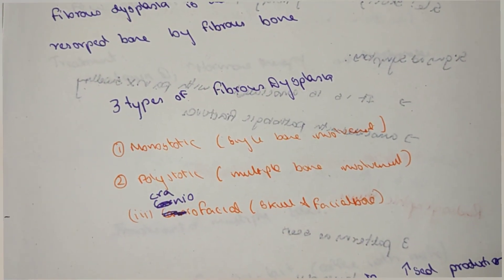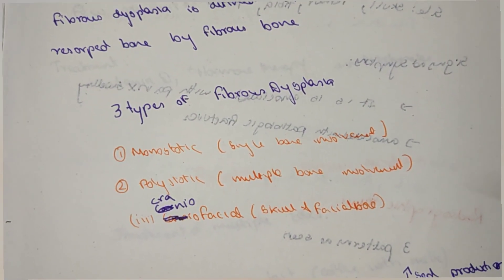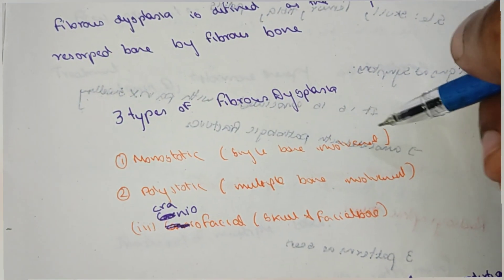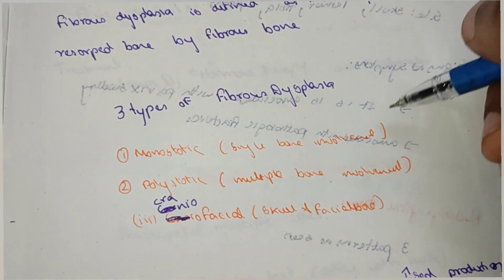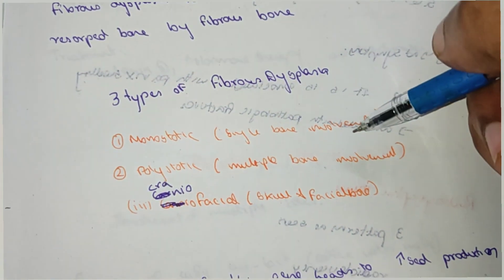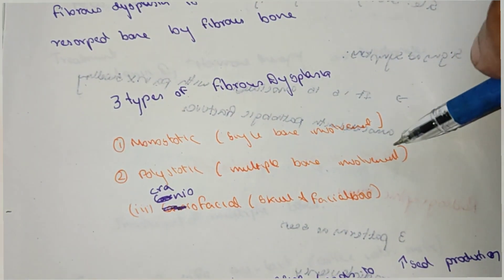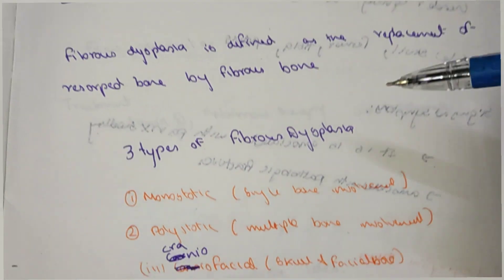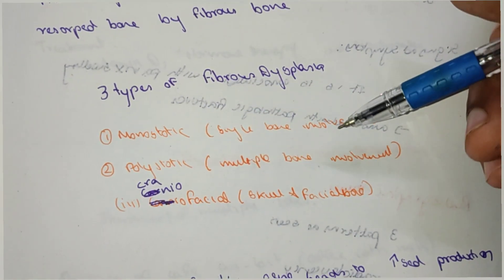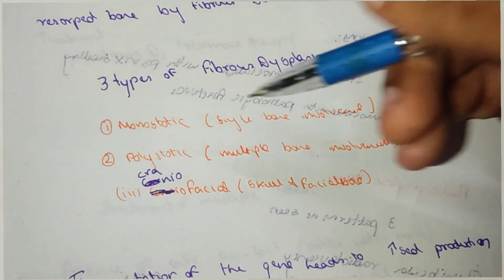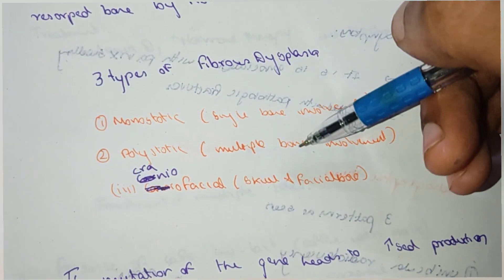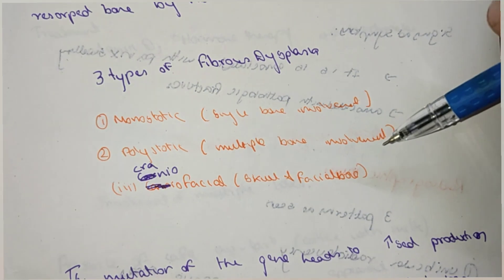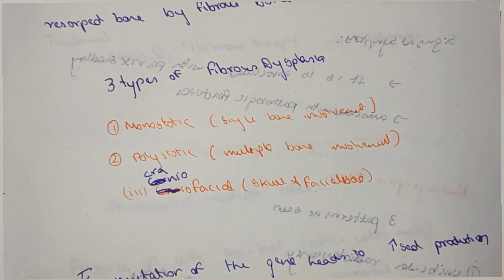There are three types of fibrous dysplasia: monocystic, polycystic, and craniofacial. Monocystic involves a single bone. Polycystic involves multiple bones. Craniofacial involves the skull and facial bones.